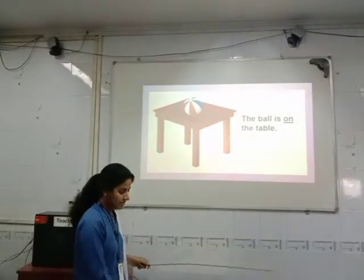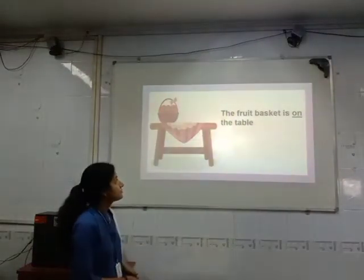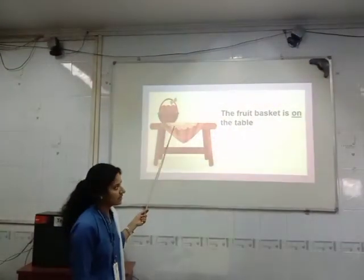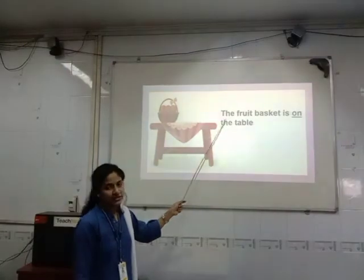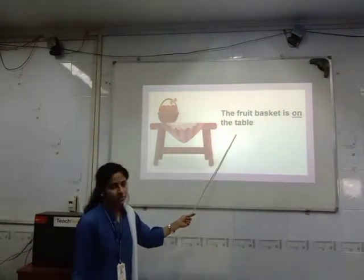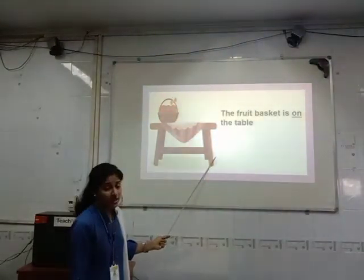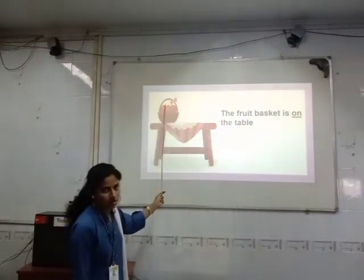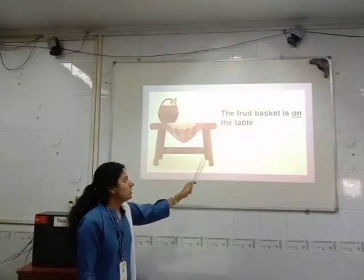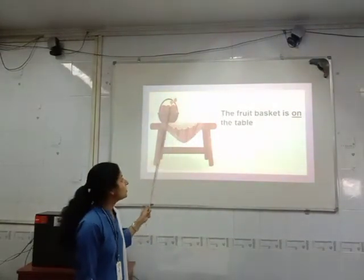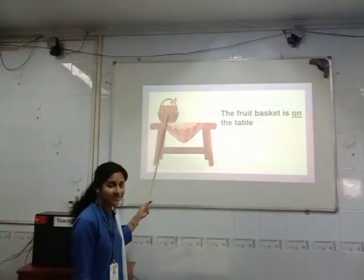Now we will see the next example. What do you see? There is a table and a fruit basket. We will read this sentence: The fruit basket is on the table. So where is the fruit basket? Is it under the table? No. Is it near the table? No. The fruit basket is on the table. So the word 'on' shows us exactly the position of the fruit basket.